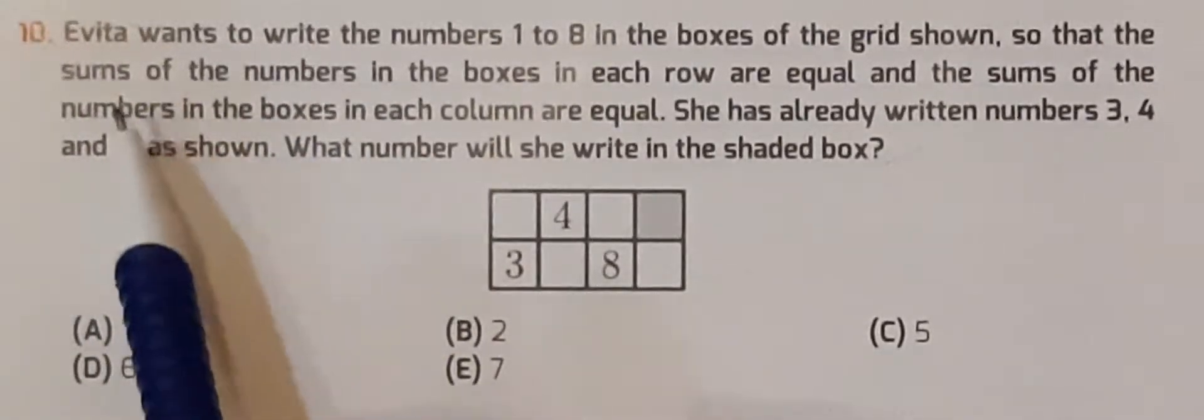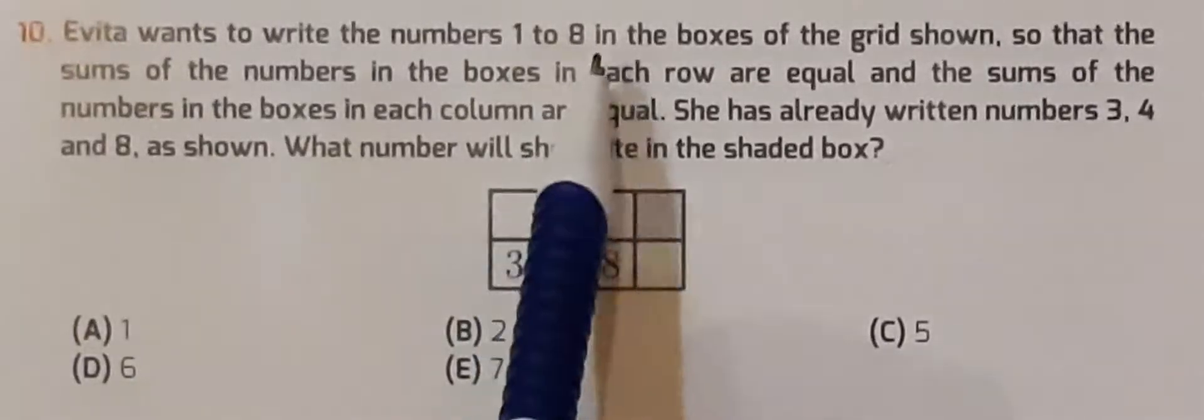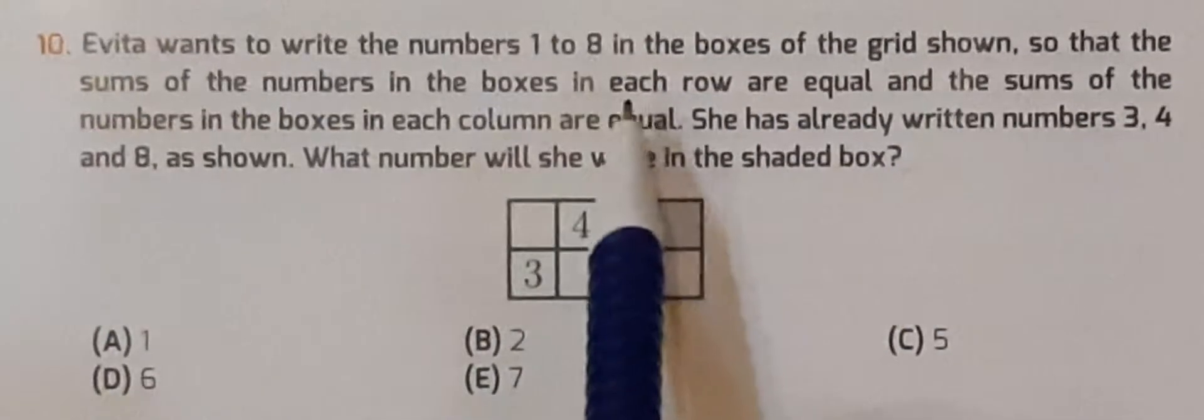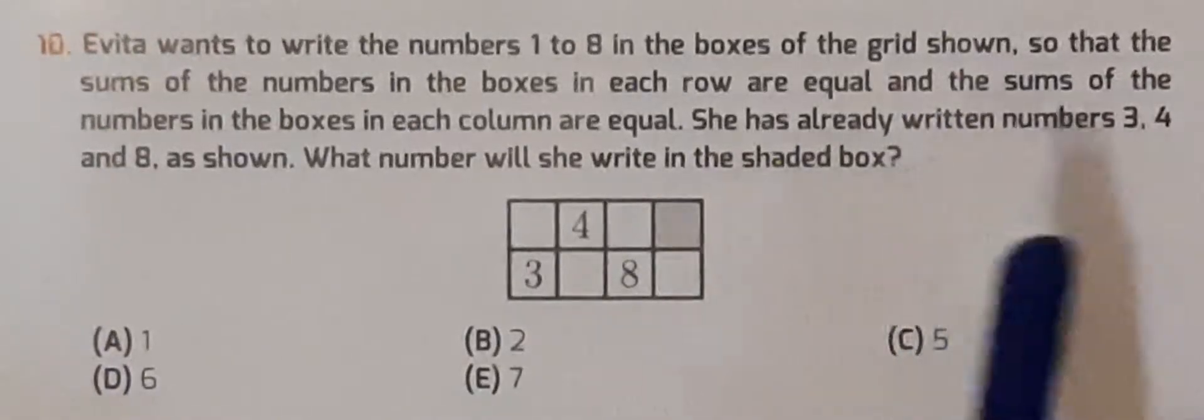Question number 10 is: Evita wants to write the numbers 1 to 8 in the boxes of the grid shown, so that the sums of the numbers in the boxes in each row are equal and the sums of the numbers in the boxes in each column are equal.